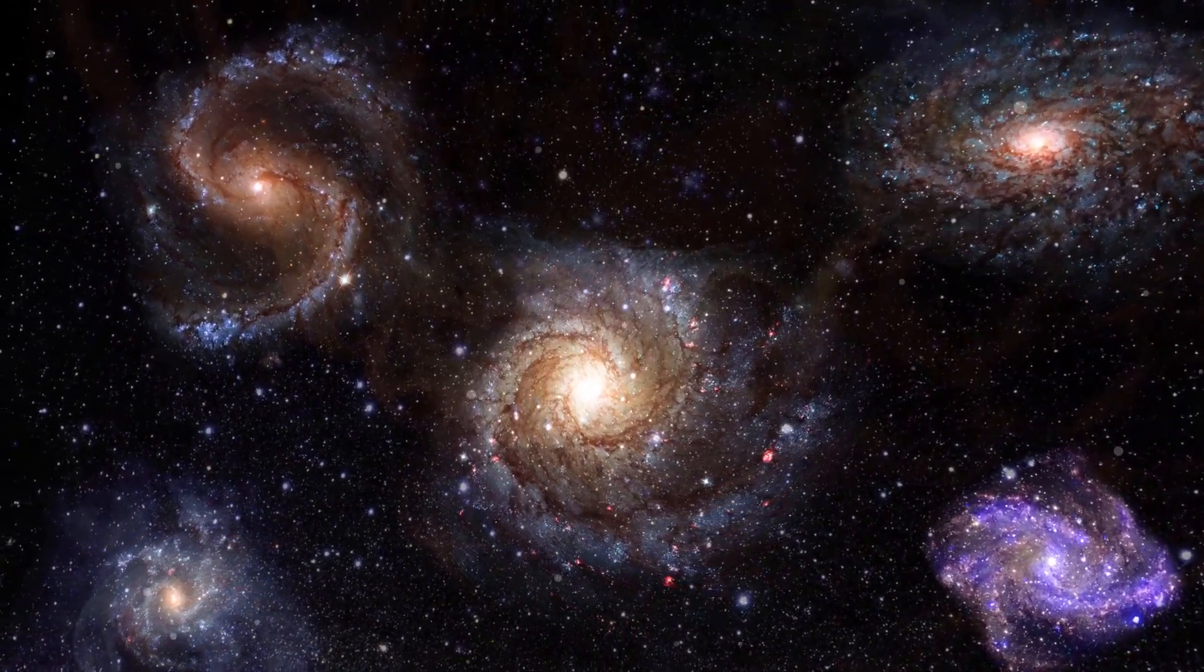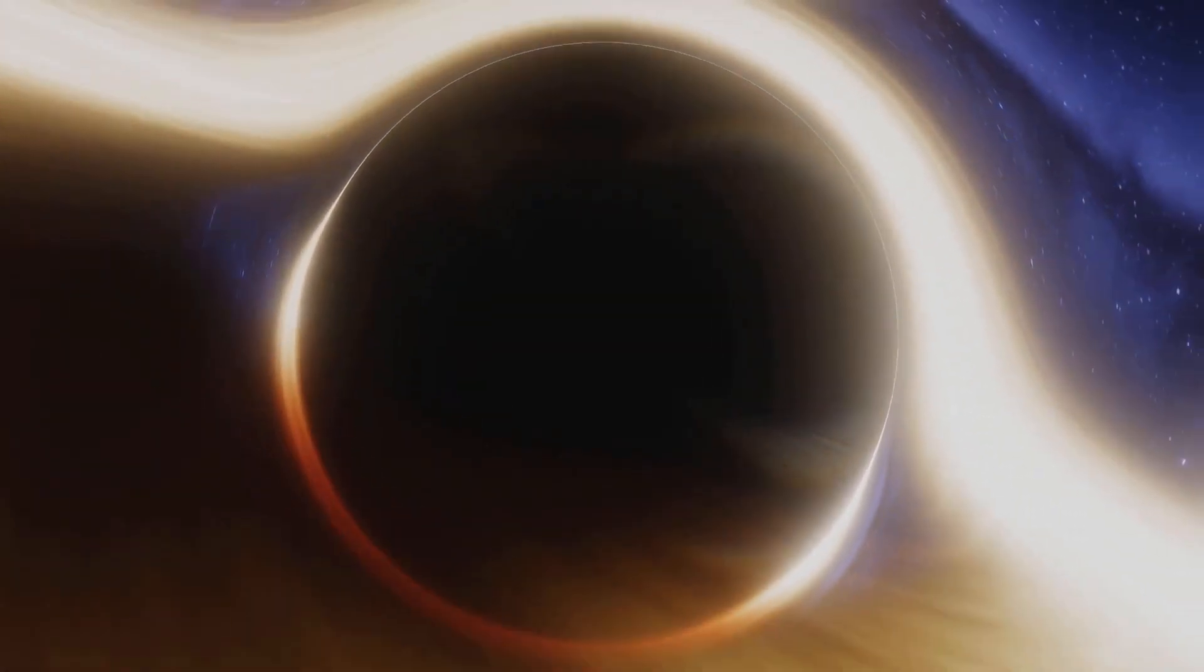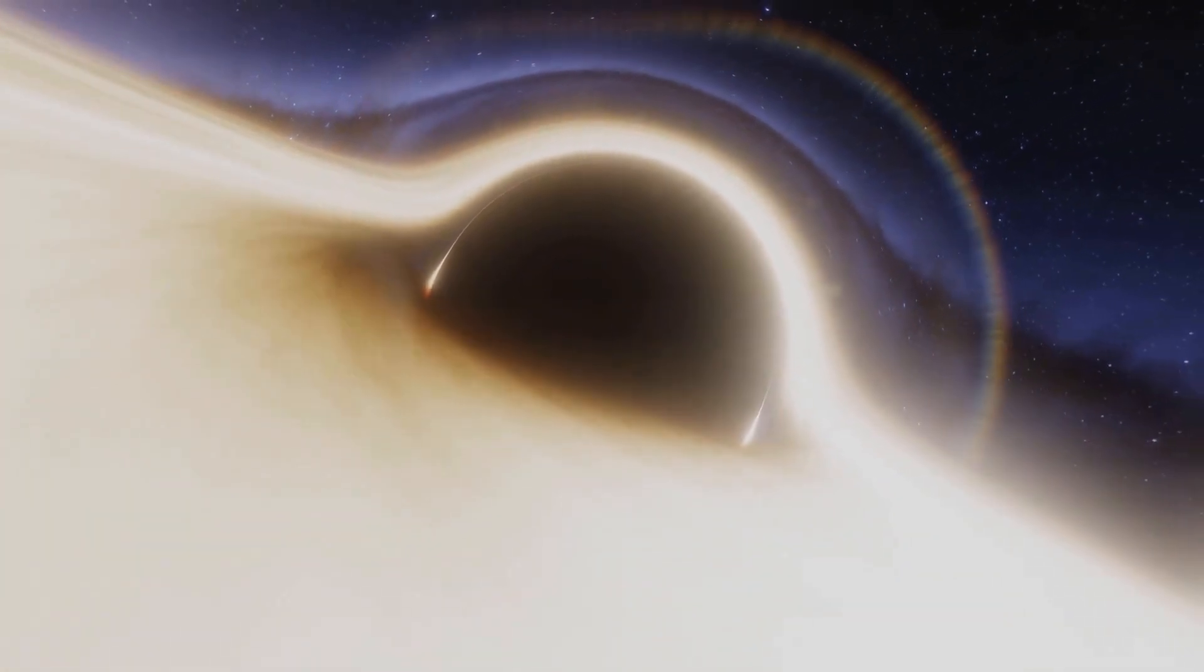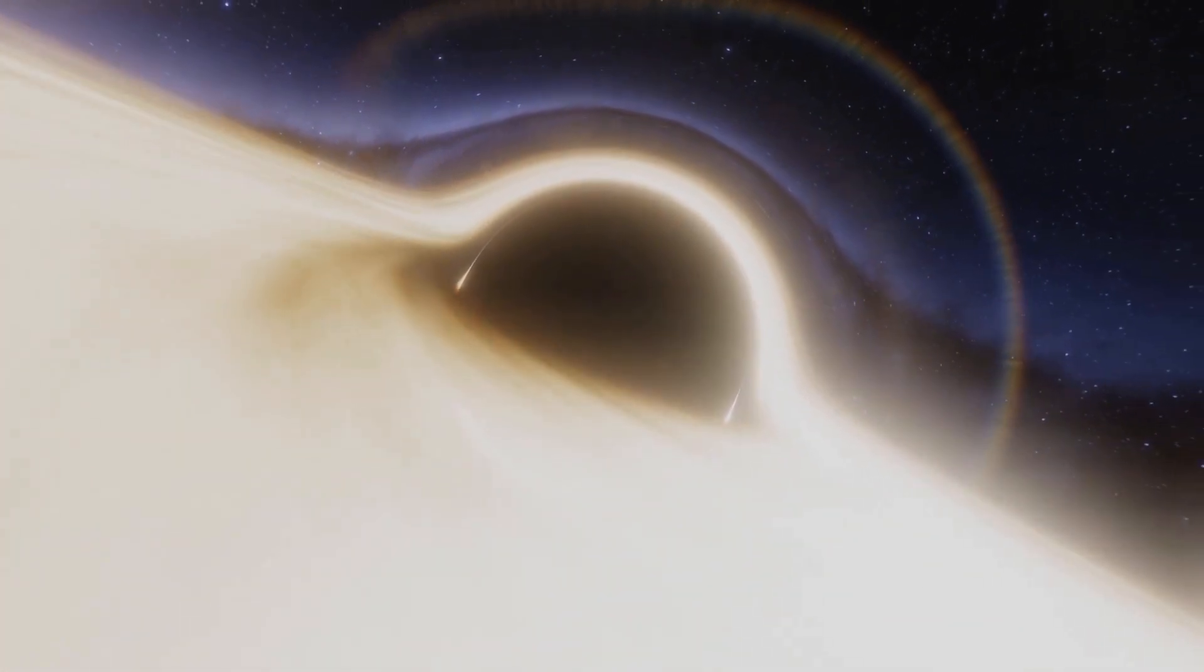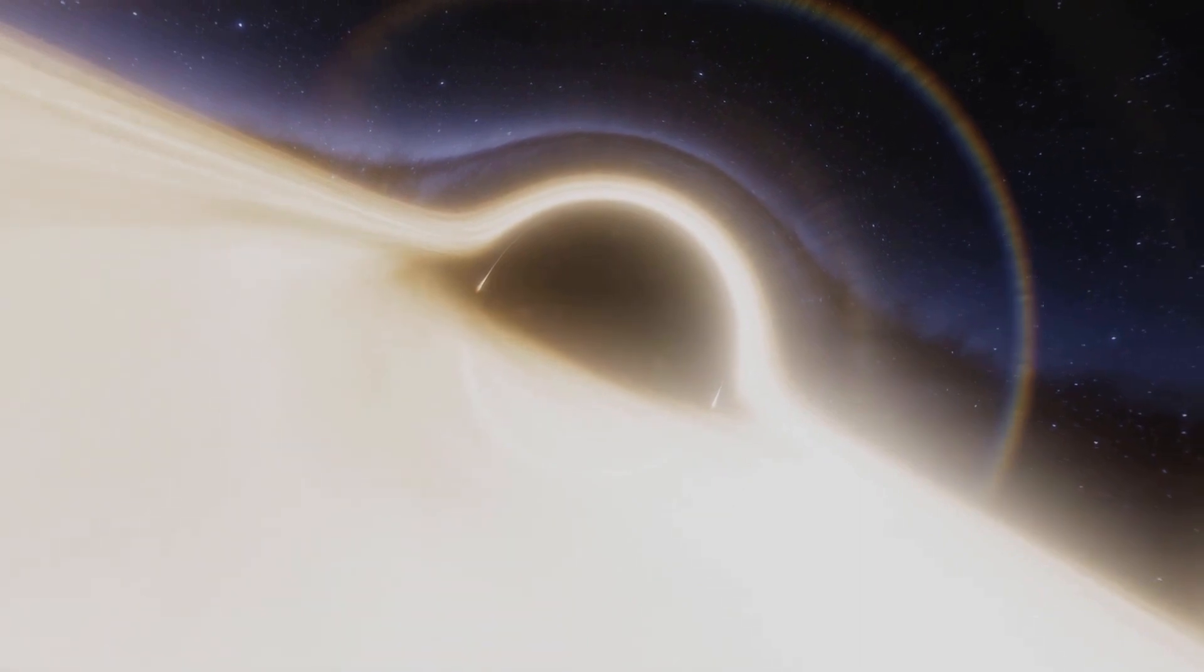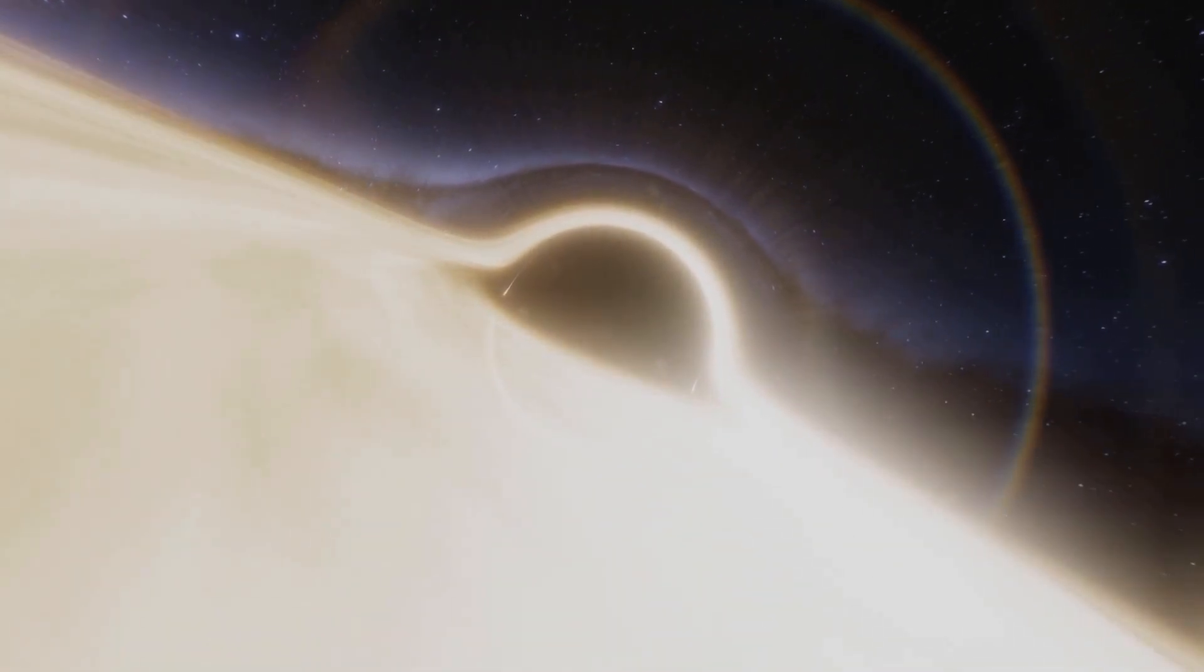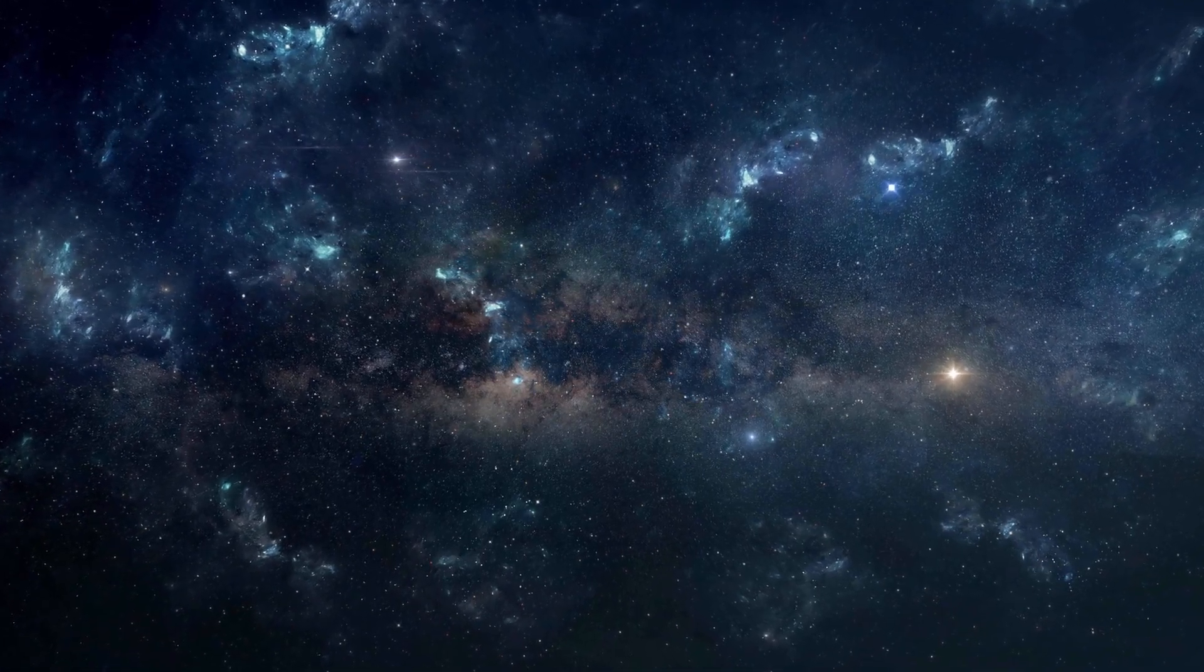According to Smolin's theory, inside the black hole, the conditions may be vastly different from our observable universe. He proposes that through a process called a big bounce, the singularity inside the black hole could trigger the formation of a new baby universe with its own unique set of physical laws and constants. In this scenario, each universe could be seen as a kind of offspring of a black hole in the parent universe.